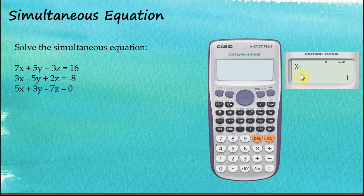The calculator tells us that x equals 1. Using the down-arrow button for the next answers, y equals 3 and z equals 2. That's how we use our FX570ES Plus calculator to solve simultaneous equations with three unknowns. If you know how much work is needed to find this answer manually, you will really appreciate this calculator because it saves a lot of time solving simultaneous equations with three unknowns.